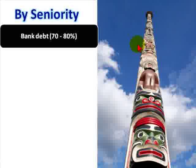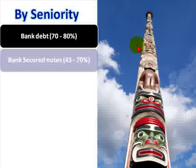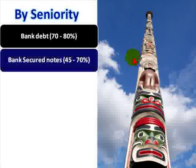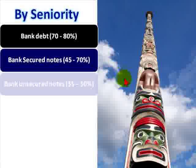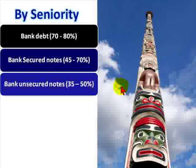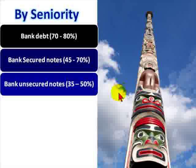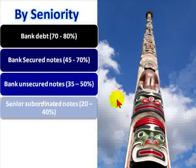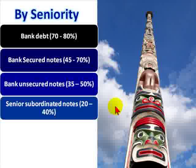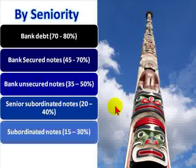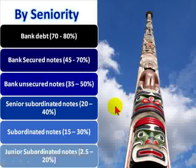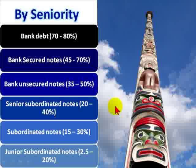the first criteria is seniority, with bank debt having the highest recovery, then bank secured notes, bank unsecured notes, senior subordinated notes with less than 50% recovery, subordinated notes, and finally junior subordinated notes with the lowest recovery.